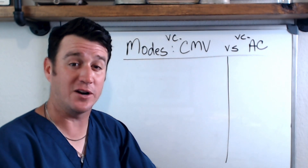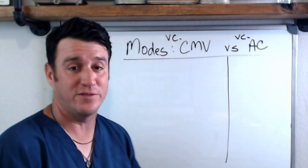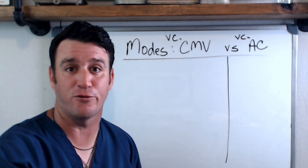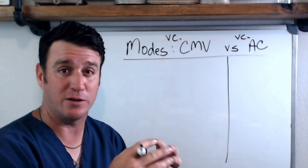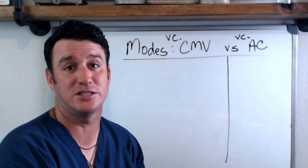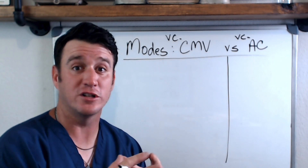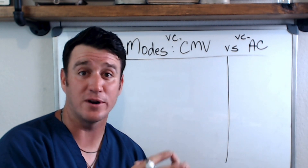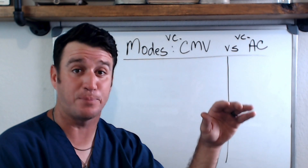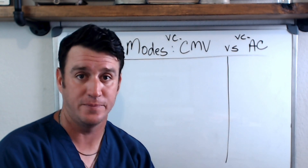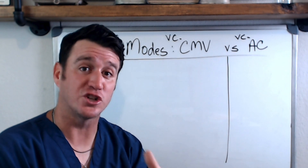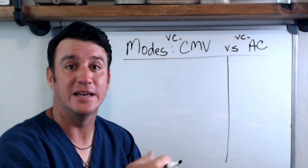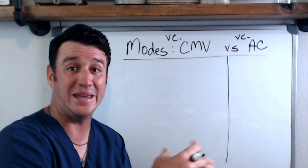You may notice a 'VC' in front of these two modes of mechanical ventilation. That's there to illustrate that in this first segment, when we're talking about settings, we're going to be operating in volume control. When you're in volume control, you set parameters that control delivered volume, but pressure will vary.